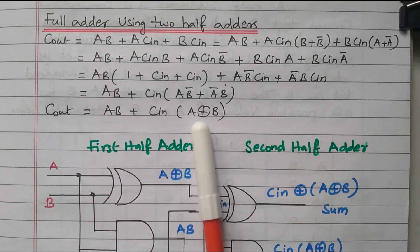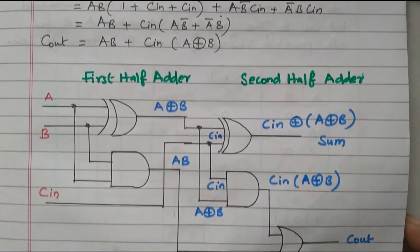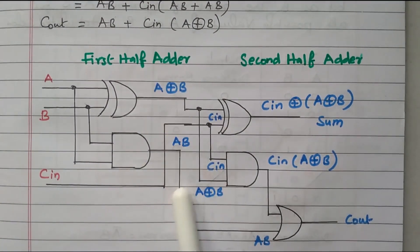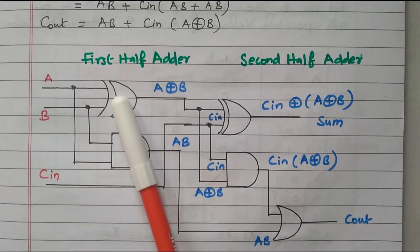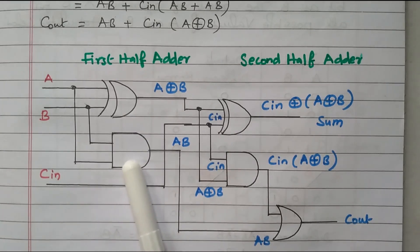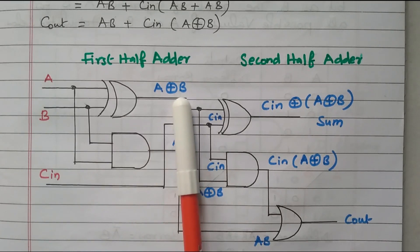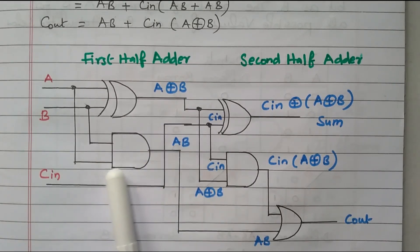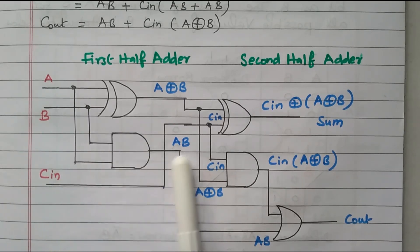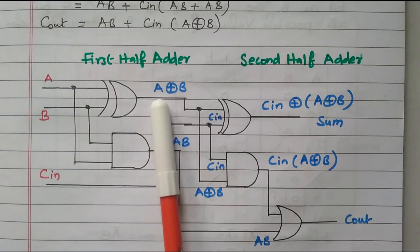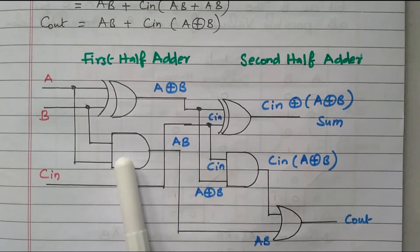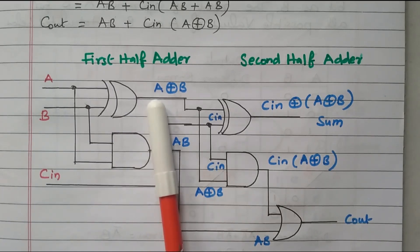Now we implement the full adder using two half adders. The first half adder has two inputs A and B. Using an XOR gate it produces sum = A XOR B, and using an AND gate it produces carry = A·B. So the first half adder gives outputs A XOR B and A·B.